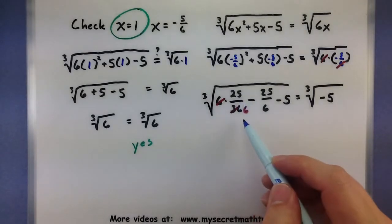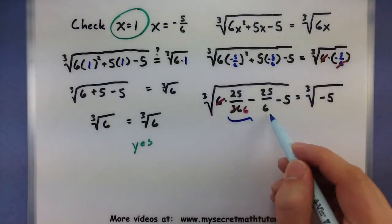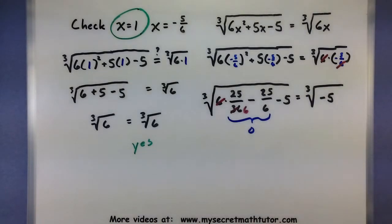And now what we can see is that both of these fractions have the same denominators. So a positive 25 sixths minus a 25 sixths. Both of these will combine and give us a 0.